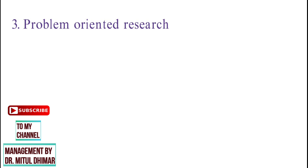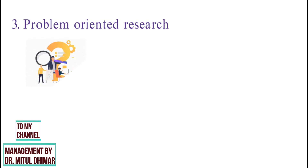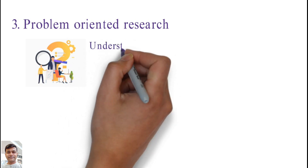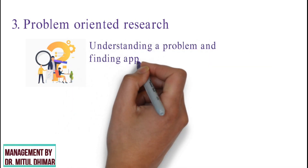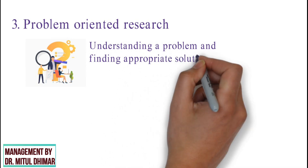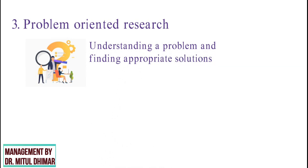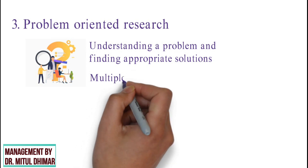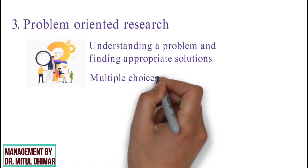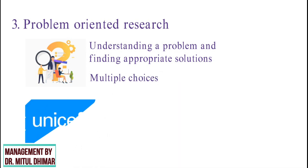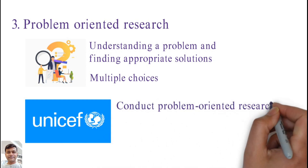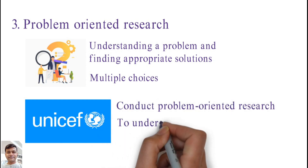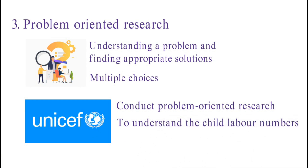Type 3: Problem oriented research. As the name suggests, problem oriented research is conducted with the aim of understanding the exact nature of a problem and finding appropriate solutions. The term problem refers to multiple choices or problems when analyzing a situation. For example, UNICEF conducts problem oriented research in all developing countries in order to understand child labor numbers.